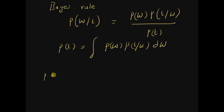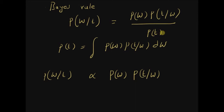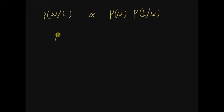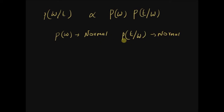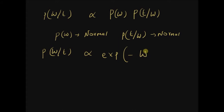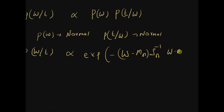From Bayes' rule, the structure of p(w|t) is proportional to the prior multiplied by the likelihood, and the evidence is independent of w. Since p(w) is Gaussian and p(t|w) is also Gaussian, they form a conjugate pair, and the posterior p(w|t) should also be Gaussian. So we assume the posterior follows a normal distribution with exponent (w − m_n)ᵀ S_n⁻¹ (w − m_n).